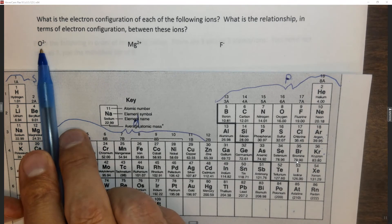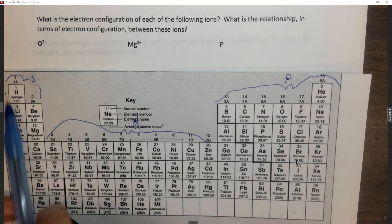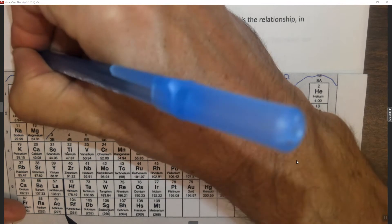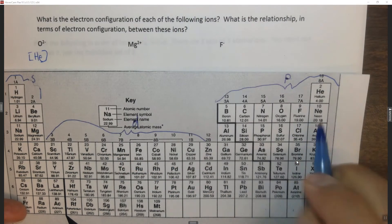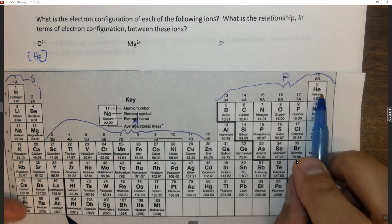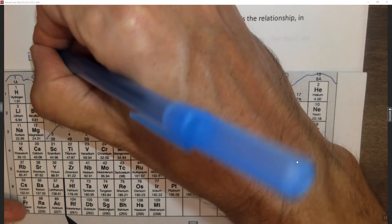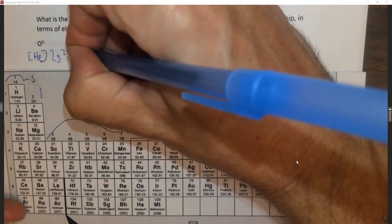So the first thing we have is O²⁻. So O would be helium, right? Helium, the noble gas in one period above, 2s², 2p⁴.